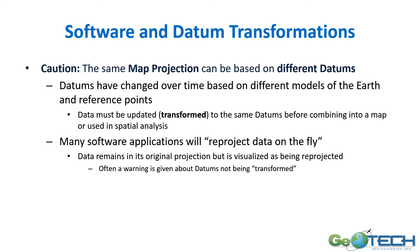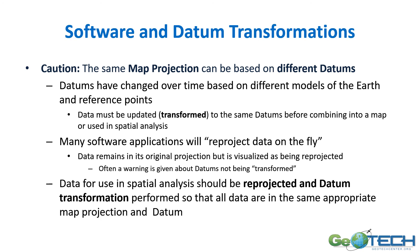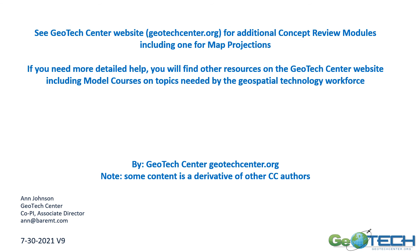A lot of software will reproject your data on the fly, but for datum transformation you'll often get a warning saying it's in a different datum and asking if you want it transformed. If you're going to do any kind of analysis, you should make sure all your data has been transformed to the same datum. Reprojection and datum transformations both need to be performed — one may be automatic in your software, the other you may have to carry out yourself. There are more concept review modules and courses available on map projections. If you have any comments, please do contact me. Thank you.